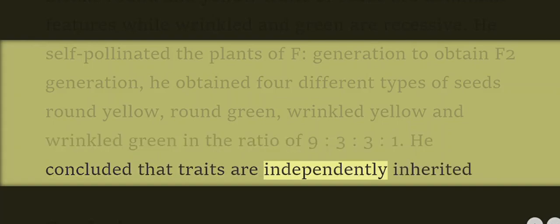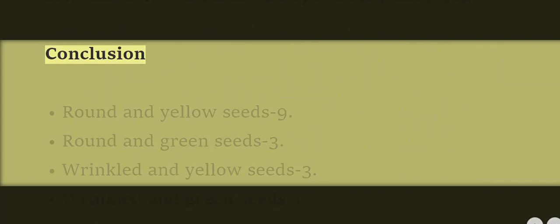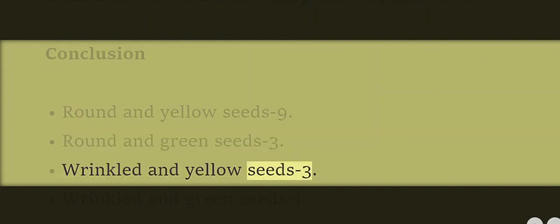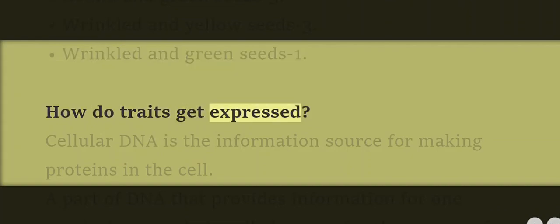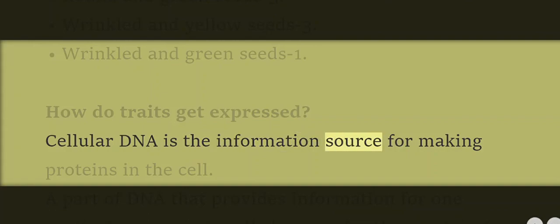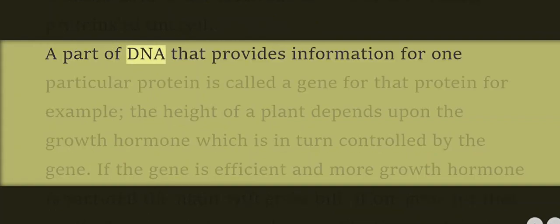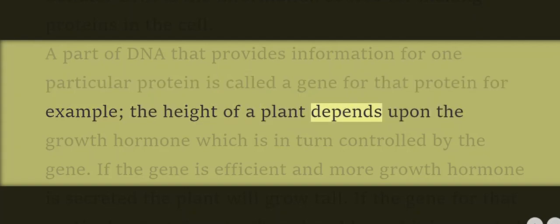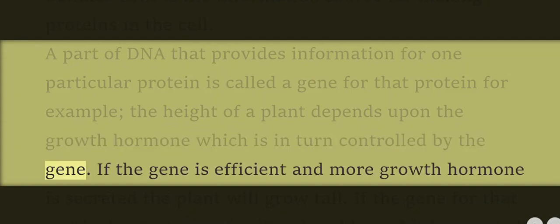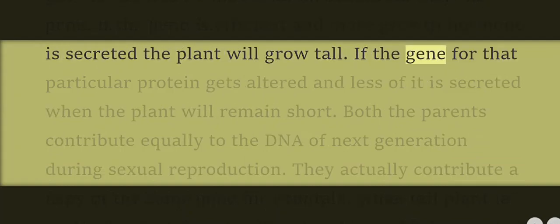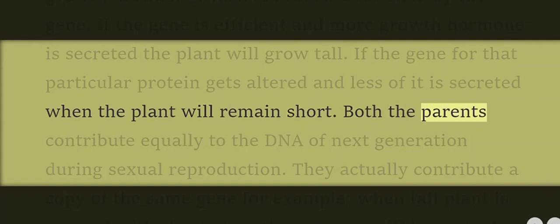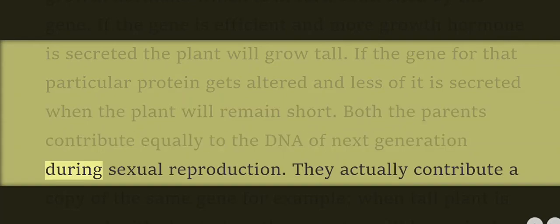How do traits get expressed? Cellular DNA is the information source for making proteins in the cell. A part of DNA that provides information for one particular protein is called a gene for that protein. For example, the height of a plant depends upon a growth hormone, which is in turn controlled by the gene. If the gene is efficient and more growth hormone is secreted, the plant will grow tall. If the gene for that particular protein gets altered and less of it is secreted, the plant will remain short. Both parents contribute equally to the DNA of the next generation during sexual reproduction.